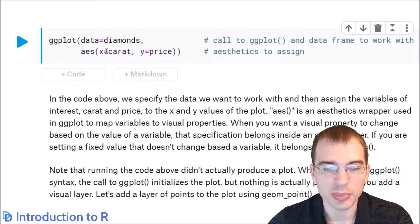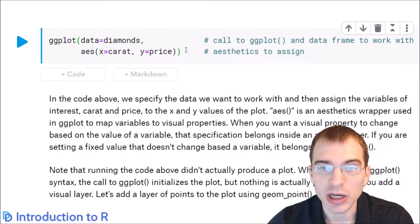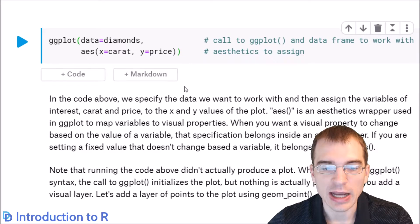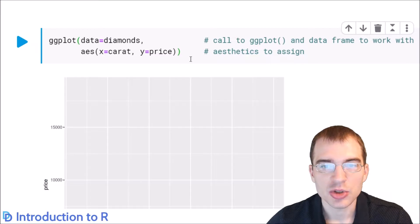We're going to map carat to the x-axis and price to the y-axis. This is setting up a plot with these parameters. But unlike qplot, where when you run it, it actually creates the plot right away, with ggplot, this call just initializes the plot. We haven't specified a geometry yet. When we run this, it will create an empty plot because we haven't drawn any geometry on the plot yet.